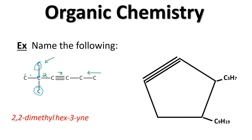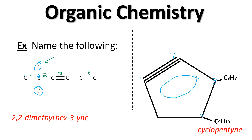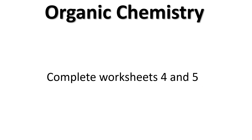For a cyclic alkyne example with a ring, we still number so the triple bond is in the one spot, then choose the direction that gives substituents the lowest numbers. With five carbons in the ring, this is a cyclopentyne. The substituents are a propyl group and a nonyl group — alphabetically, nonyl comes first: 4-nonyl-3-propylcyclopentyne. Go ahead and complete worksheets four and five.